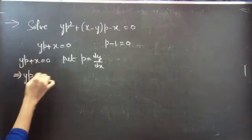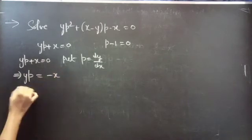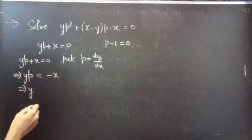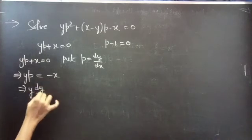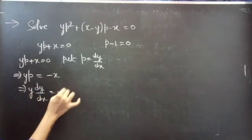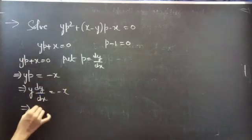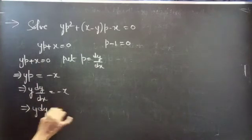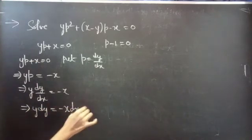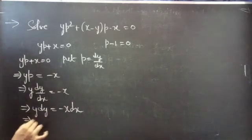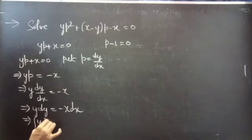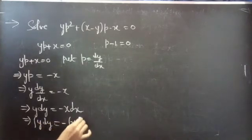Then YP equals to minus X. Substituting P equals to dy by dx: Y into dy by dx equals to minus X. This can be written as Y dy equals to minus X dx. Since the variables are separable, we can integrate on both sides: integral of Y dy equals to minus integral of X dx.